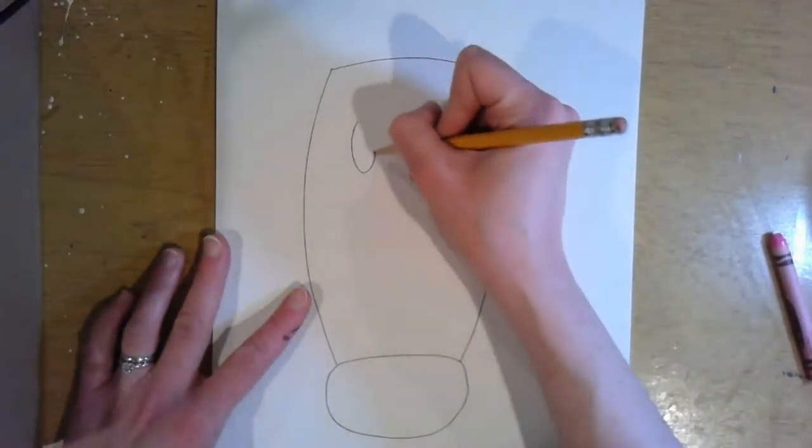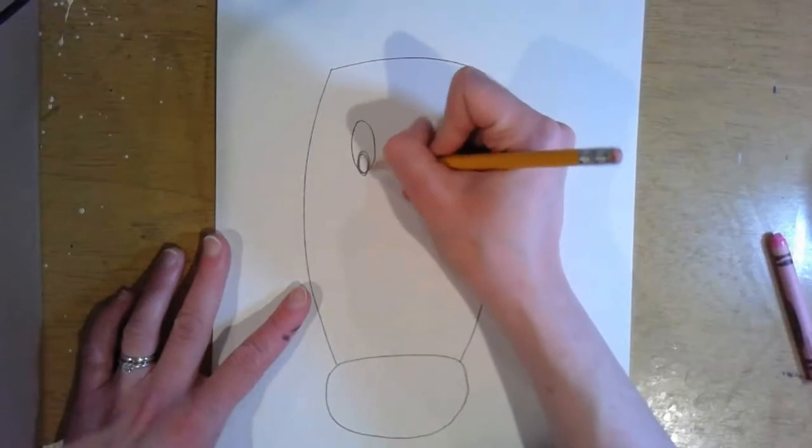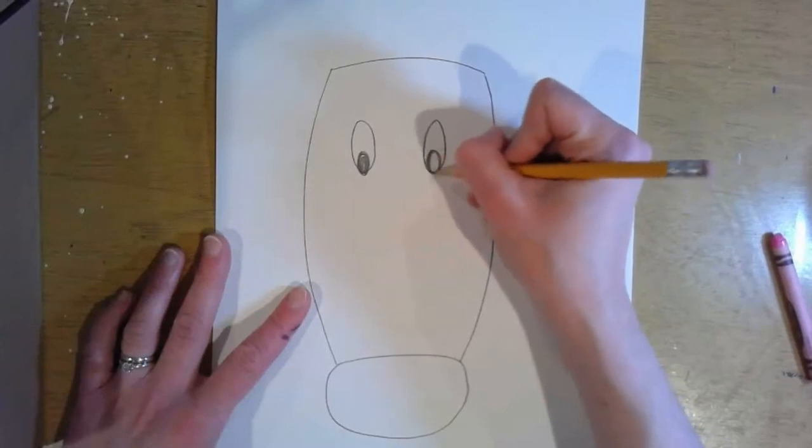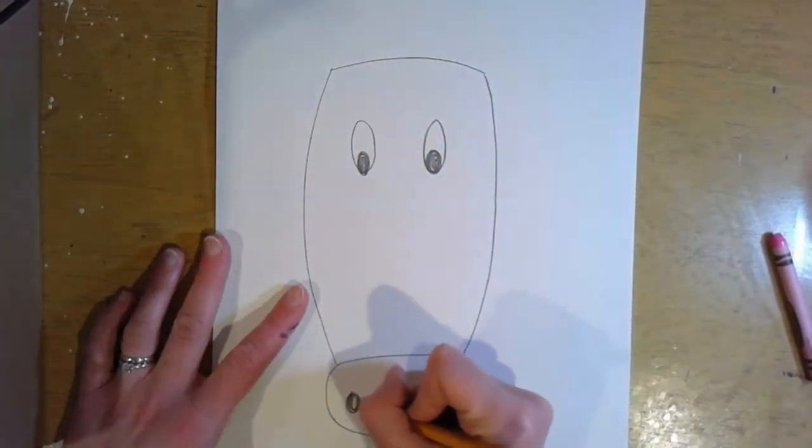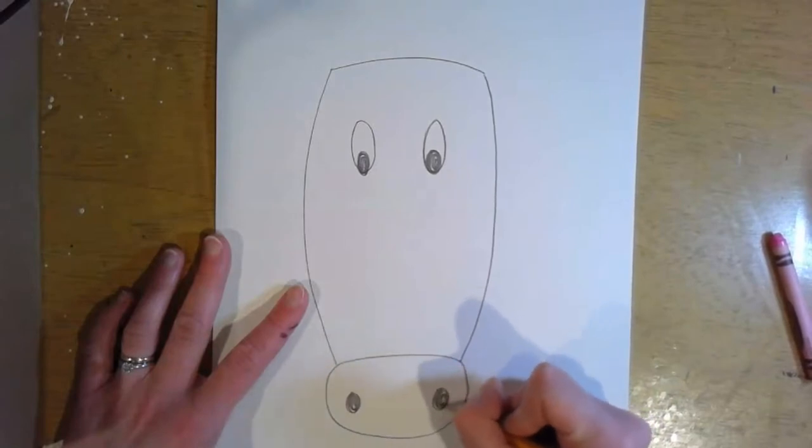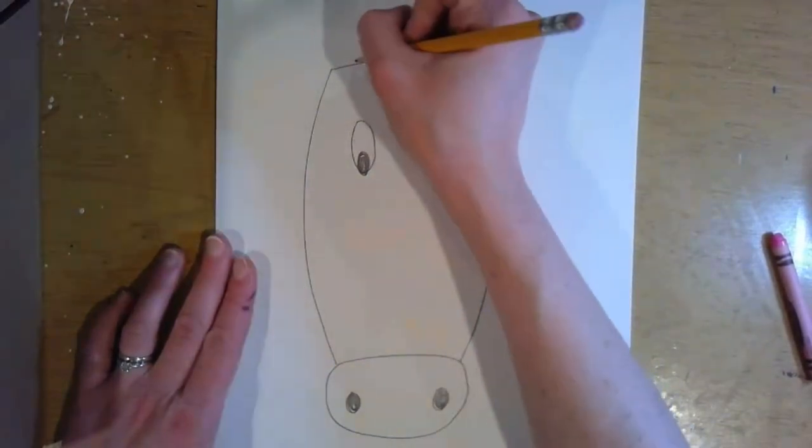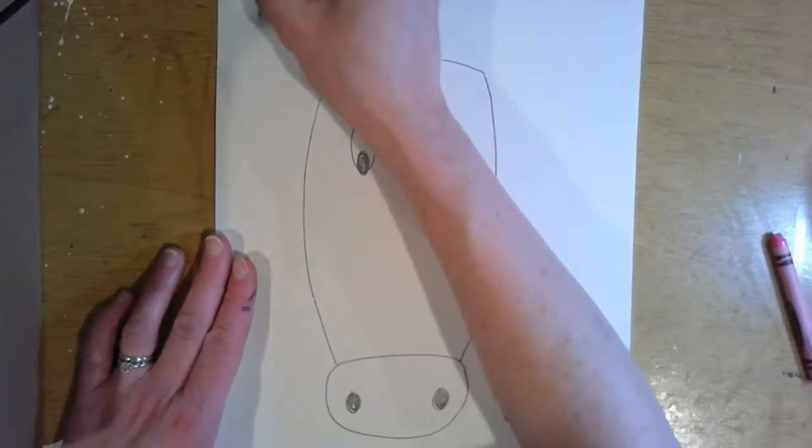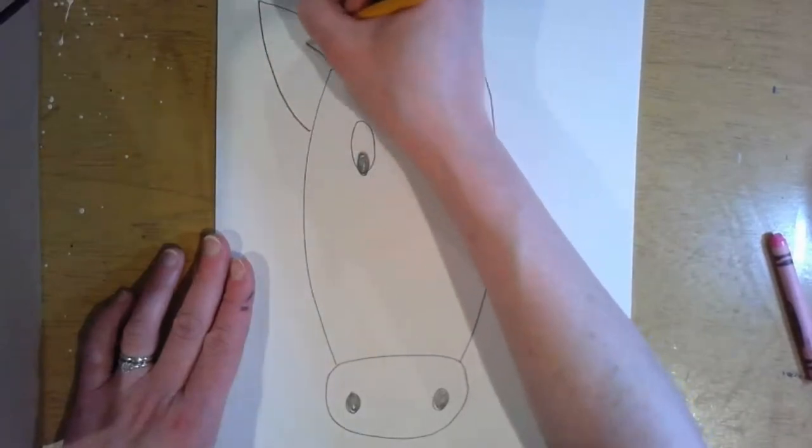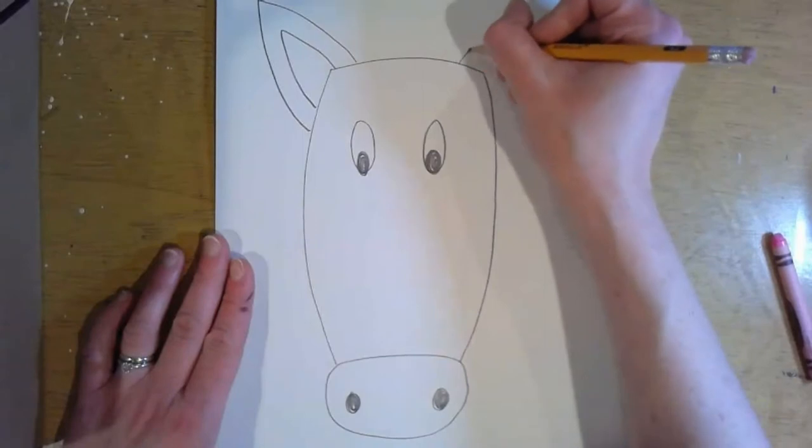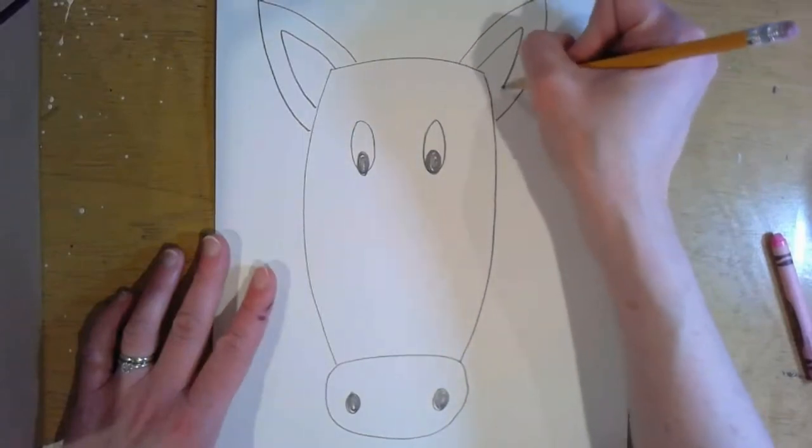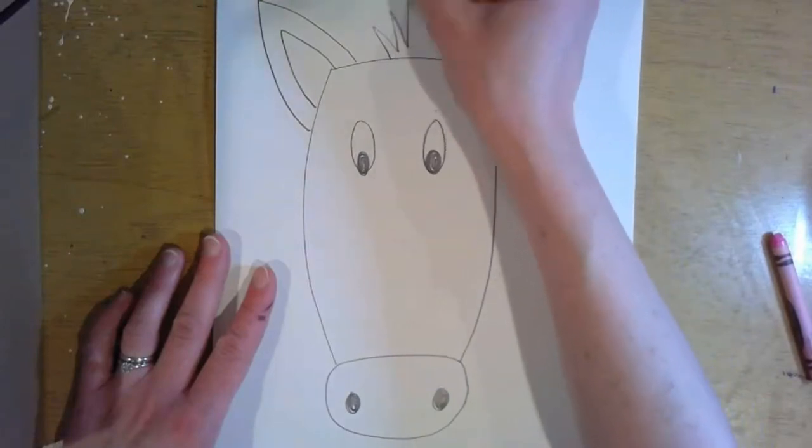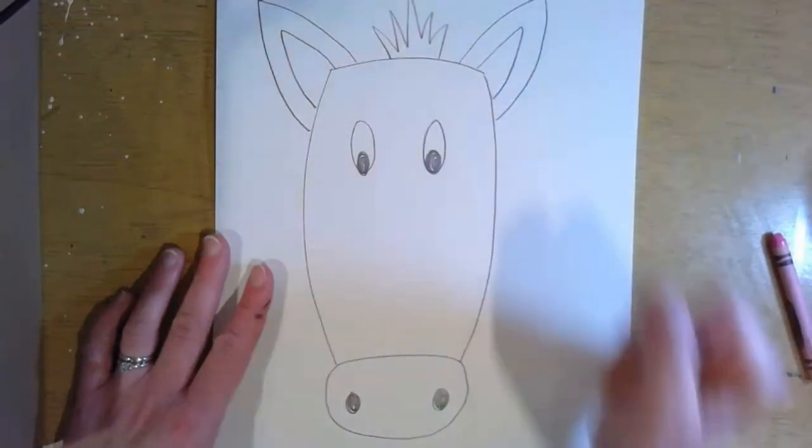Now I'm going to add two eyes with eyeballs, two nostrils in the snout, two big ears in the top corners, and a little spiky hair.